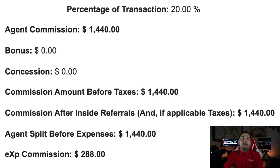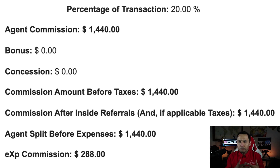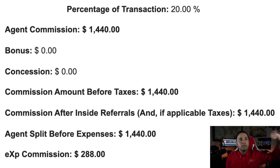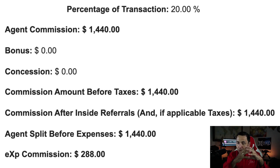Elizabeth takes the 80%. Now, the eXp commission: at eXp, the split is 80/20 — 80% for the agent, 20% for the brokerage. That's your split until you cap at $16,000. After you cap, you receive 100% of the commission. So as far as the eXp commission is concerned, eXp is entitled to 20% off of this transaction from me specifically. Elizabeth is going to be treated differently because she may or may not have capped. Everyone is treated individually — the transaction is one, but each individual's situation is different.